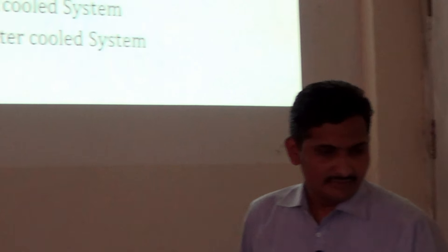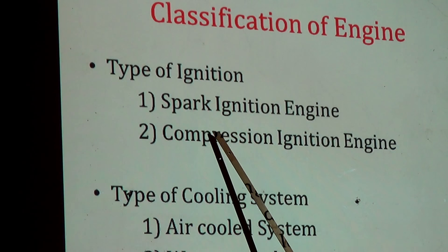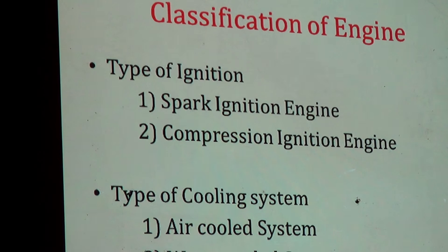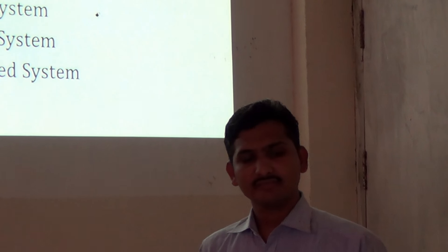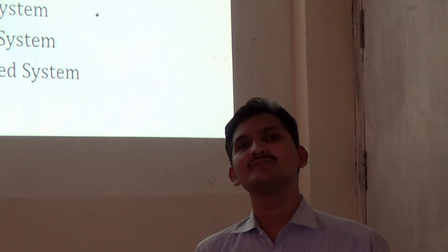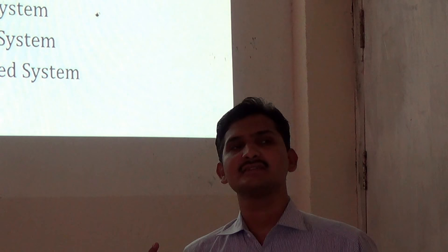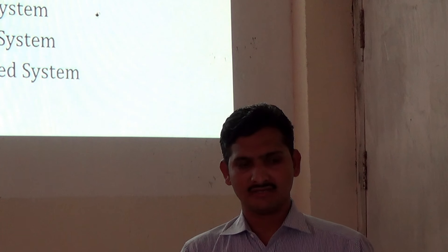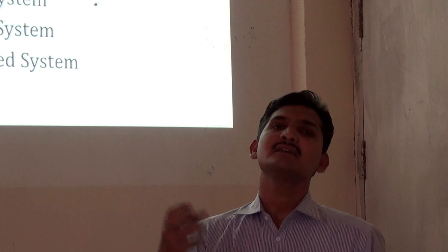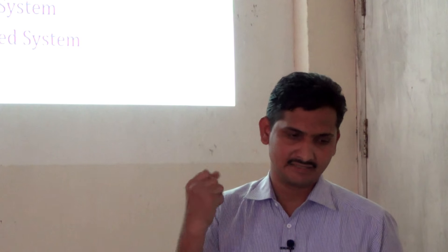Next is types of ignition: spark ignition engine and compression ignition engine. If a spark plug is used for combustion of the fuel, it is called a spark ignition engine. If a fuel injector is used, it is called a compression ignition engine. In a compression ignition engine, the charge is compressed and then ignited. In a spark ignition engine, a spark plug provides the ignition.